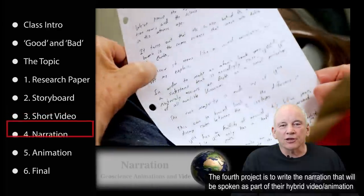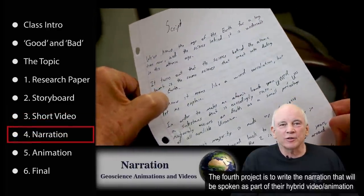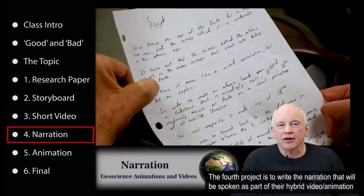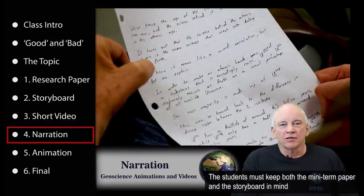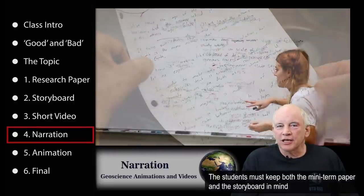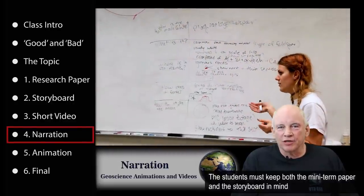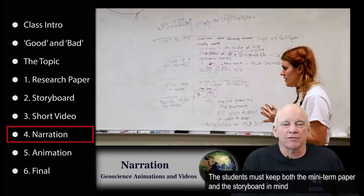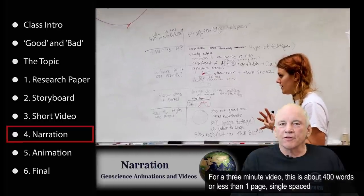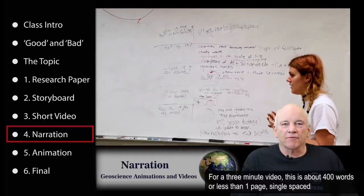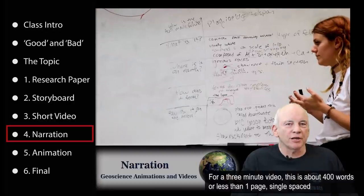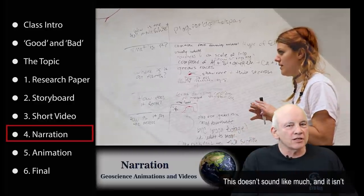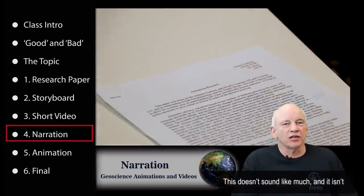The fourth project is to write the narration that will be spoken as part of the hybrid video animation. The students must keep both the mini term paper and the storyboard in mind. For a three-minute video, that's about 400 words, or less than one page single spaced. That doesn't sound like much, and it isn't.